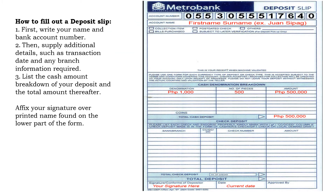Let's take a look at how to fill out a deposit slip. I have here an example of a deposit slip from Metro Bank, which I got from Google. First, we have to write our name and the bank account number — the account name, writing first name first and then followed by your surname, and then the account number. Then supply additional details such as transaction date and any branch information required. Then list the cash amount breakdown of your deposit and the total amount. After that, affix your signature over your printed name found on the lower part of the form.